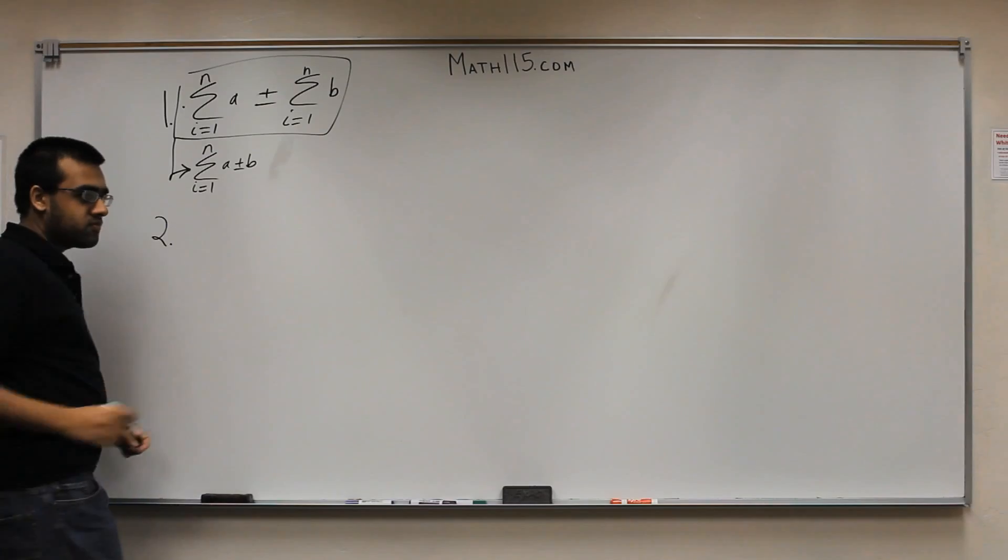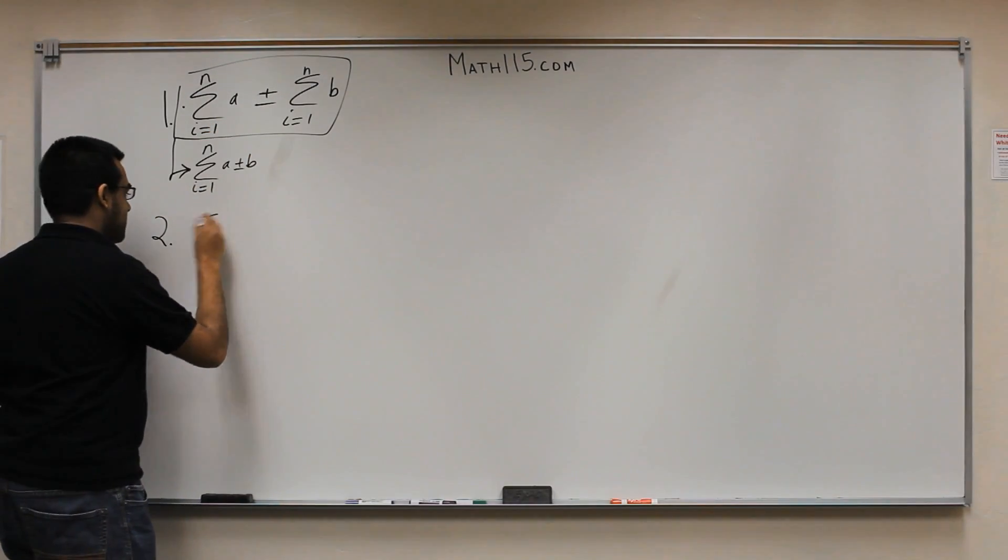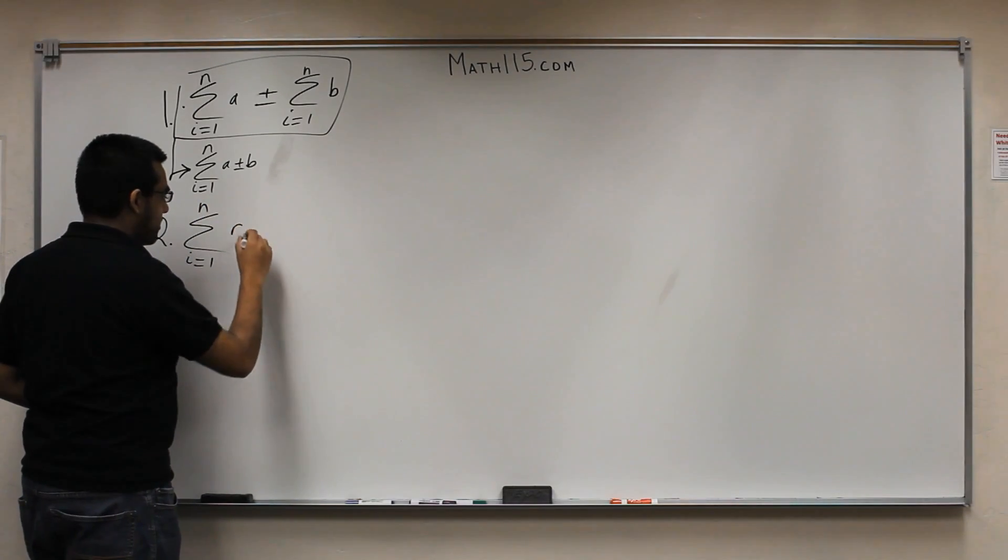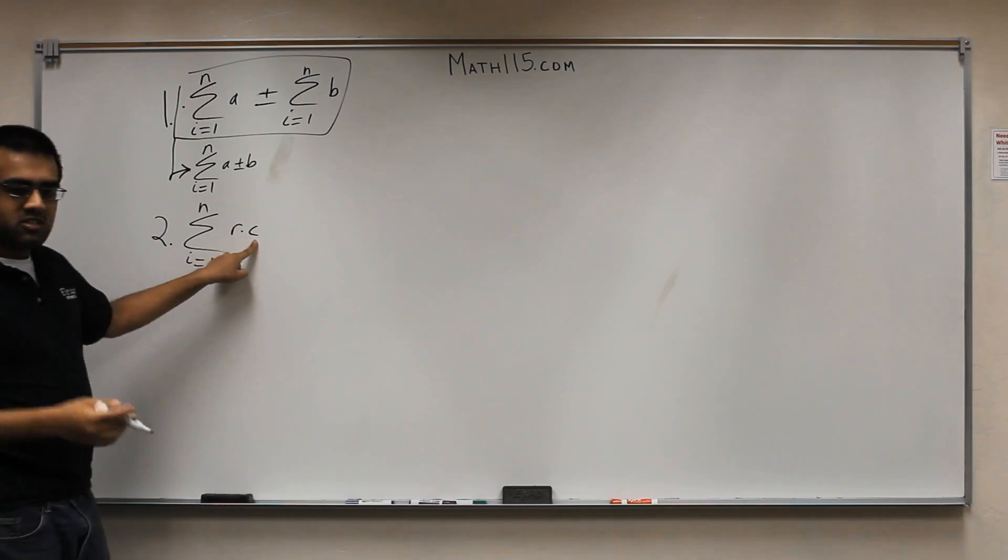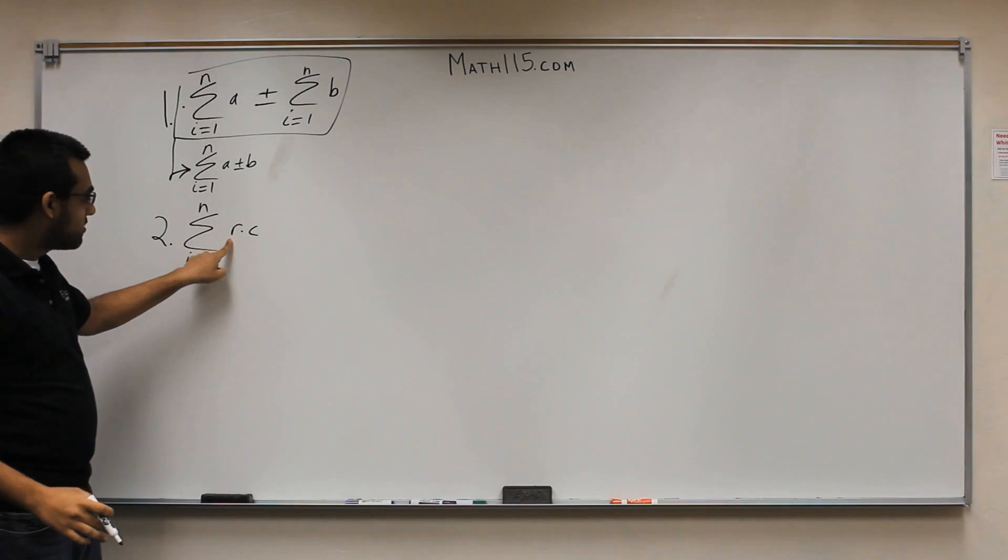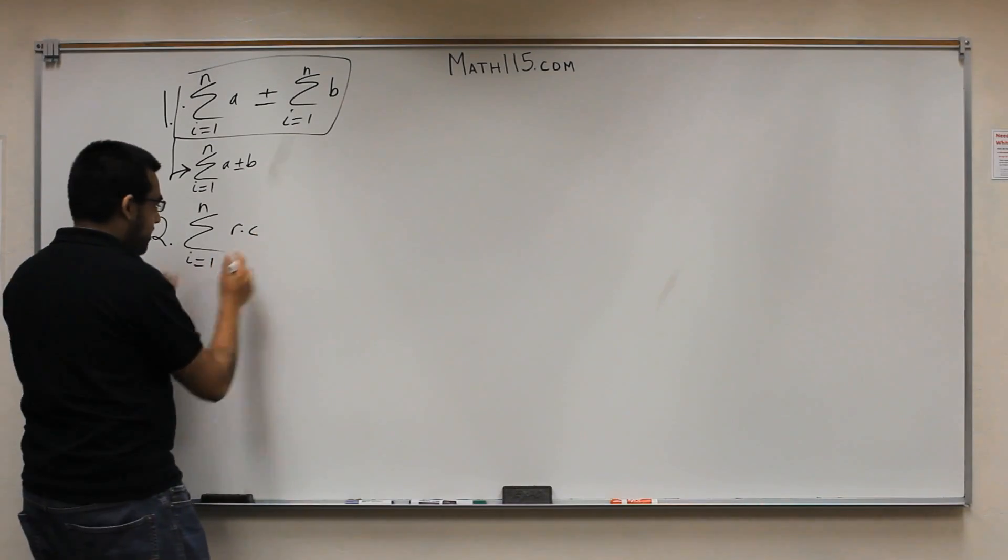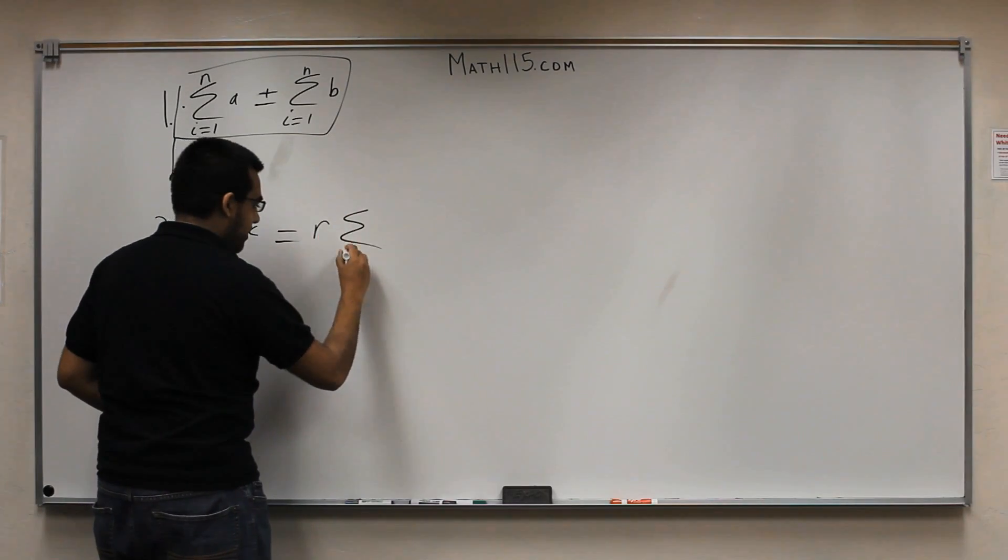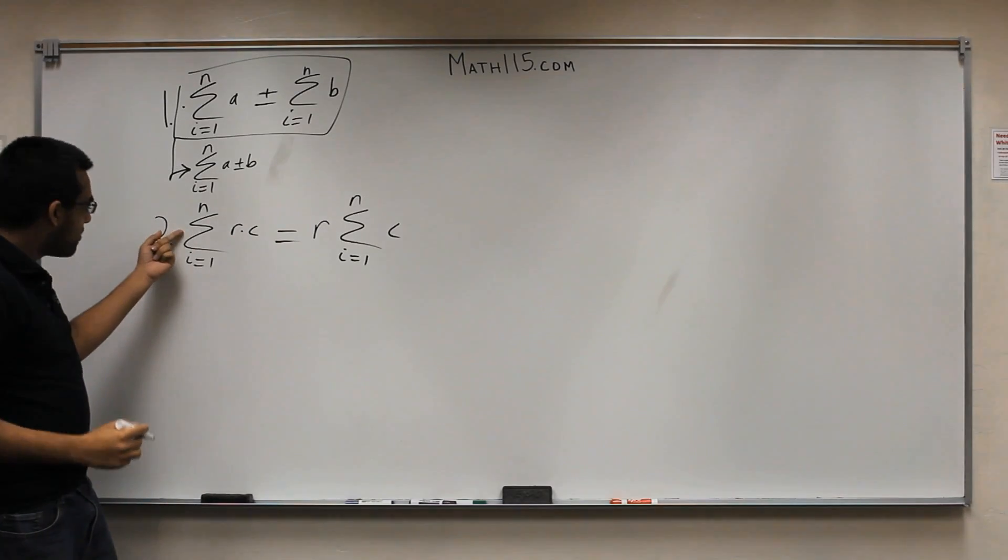So, property number two is going to be a similar concept as this one here. So, let's say you have another summation. We'll do the same range, i equals 1 to n. And what we'll do is we'll put an r here times some constant c. So, this is a constant number. This is going to be some number like 1, 10, a million, whatever it is. And this is going to be some other number that's multiplying this.